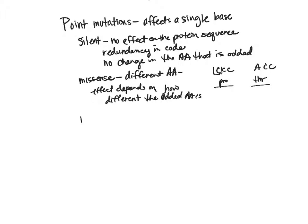The third type of point mutation is called a nonsense mutation. This is when the mutation changes the codon into a stop codon. Since it's a stop codon, translation won't continue as it should — it automatically stops the making of the protein and it falls apart. This shortens the protein because it stops prior to when it would normally stop, and we end up with a non-functional protein.